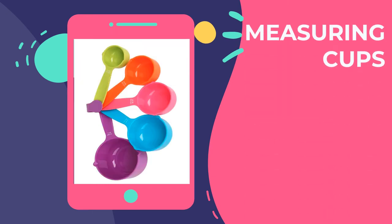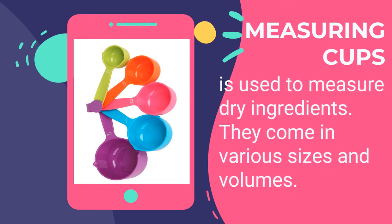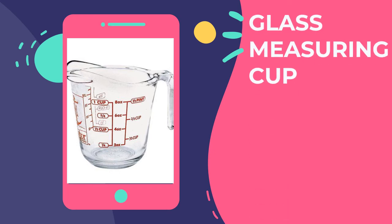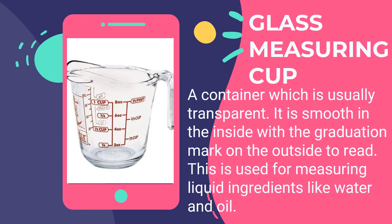Measuring cups are used to measure dry ingredients and come in various sizes. They may be made of plastic, glass, or metal. The standard four measuring cup sizes are one cup, one-half cup, one-third cup, and one-fourth cup. The glass measuring cup is a transparent container with a smooth inside and graduation marks on the outside, used for measuring liquid ingredients like water and oil.